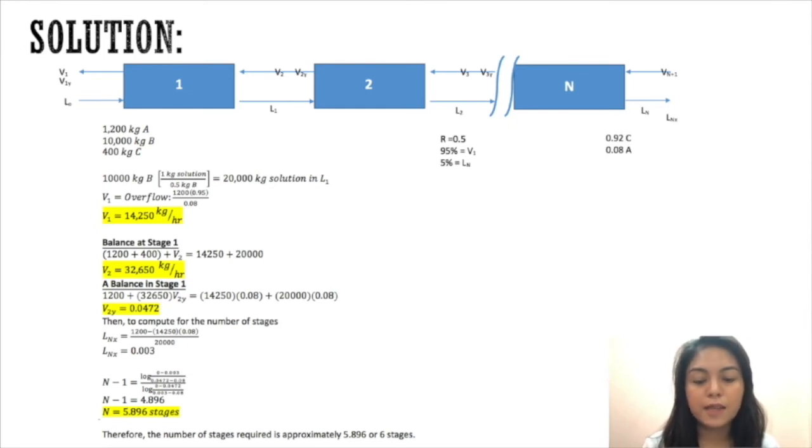For the balance at stage one, we add the mass of the copper sulfate and water plus V₂ equal to V₁ plus the kg solution in L₁. We now get V₂ of 32,650 kilograms per hour.